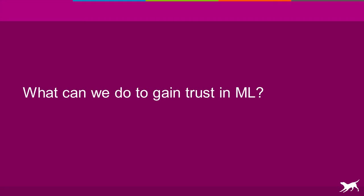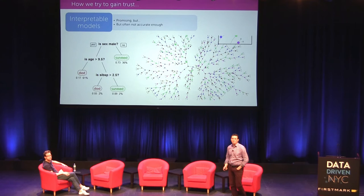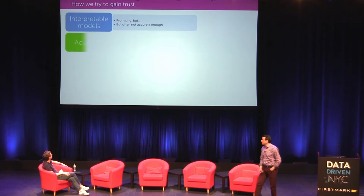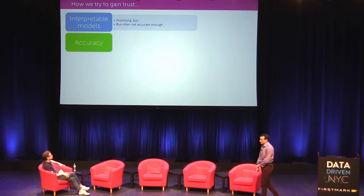So trust and transparency in machine learning is extremely important. How do we deal with trust today? Some folks advocate for what I call interpretable models — models that are simple enough to understand. A good example is a decision tree. You might look at a simple decision tree and say 'I understand why this patient has cancer.' But this decision tree will be highly inaccurate. To make it accurate, you have to make it very complex. Is that still explainable and transparent? It's kind of hard to say. A second approach is to look at accuracy — is this model performing well on some held-out data? But it turns out that accuracy can be extremely misleading.